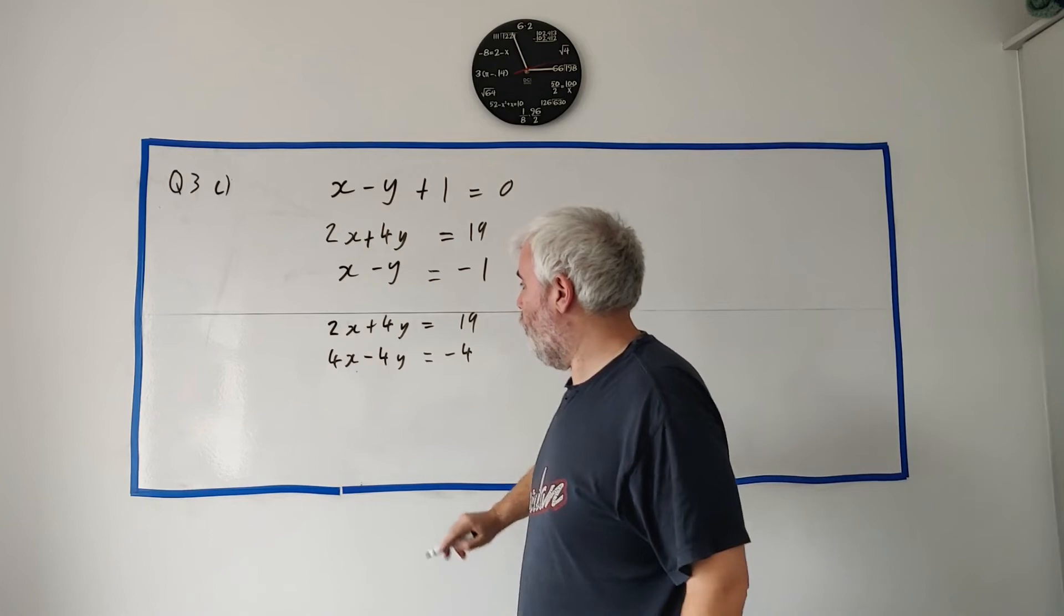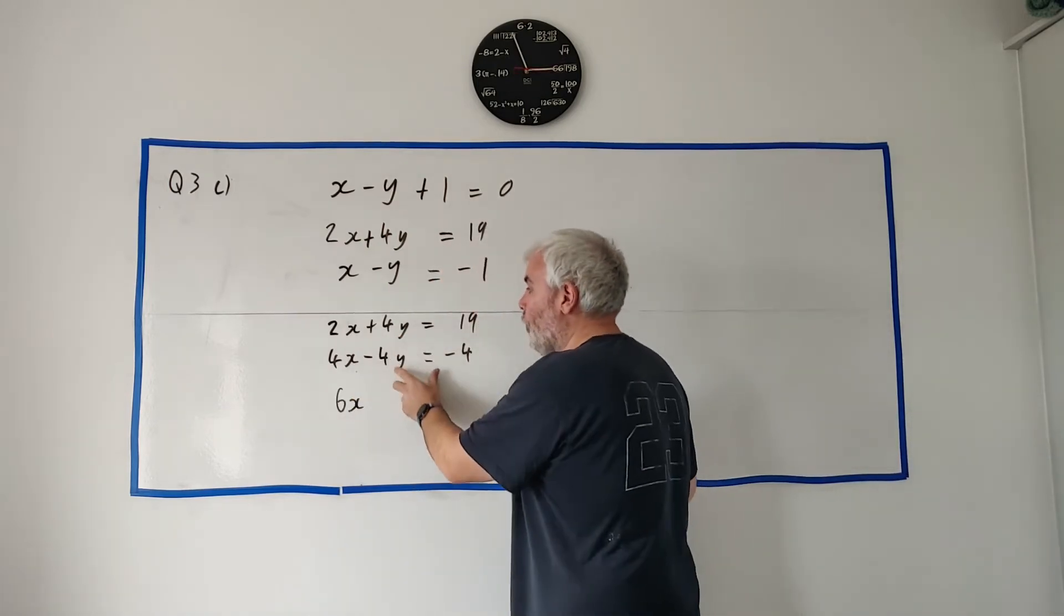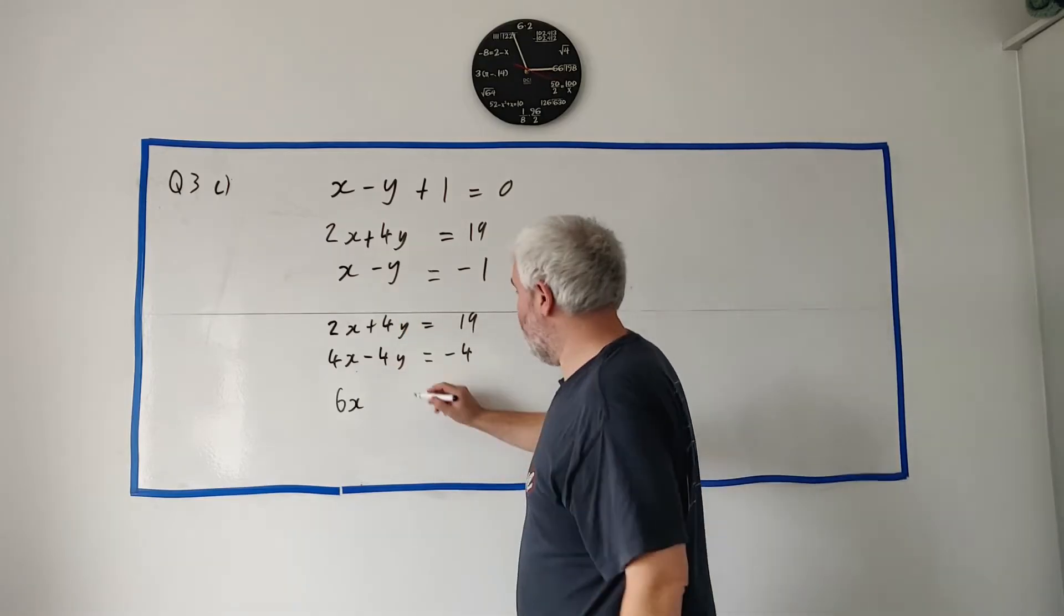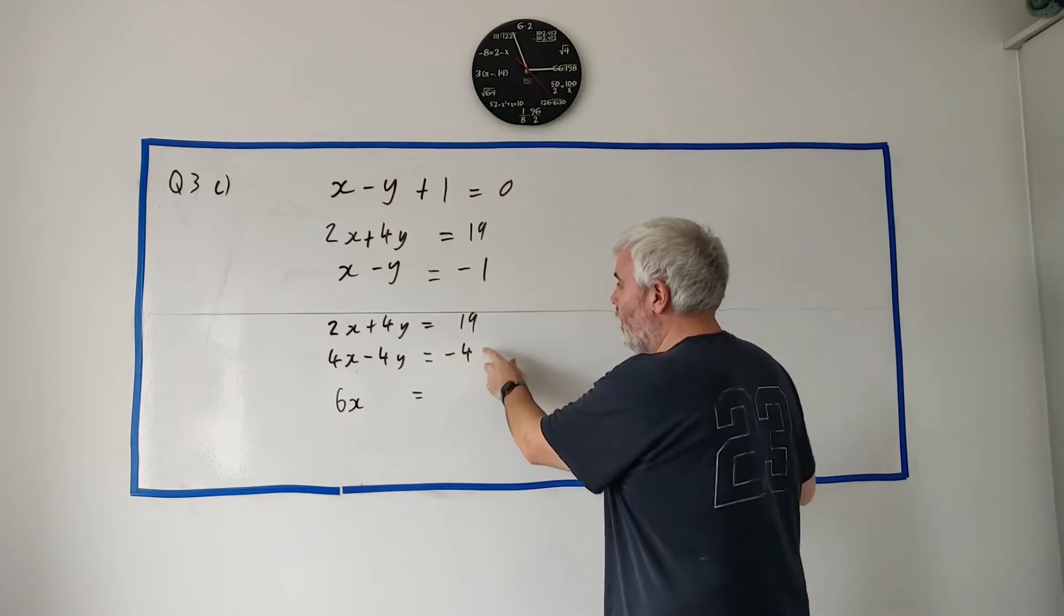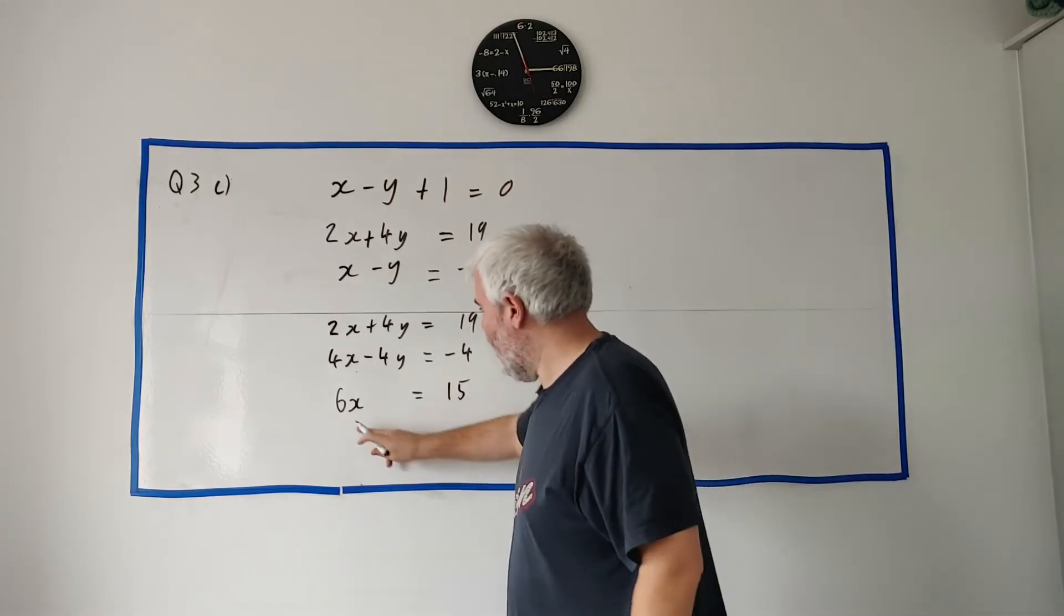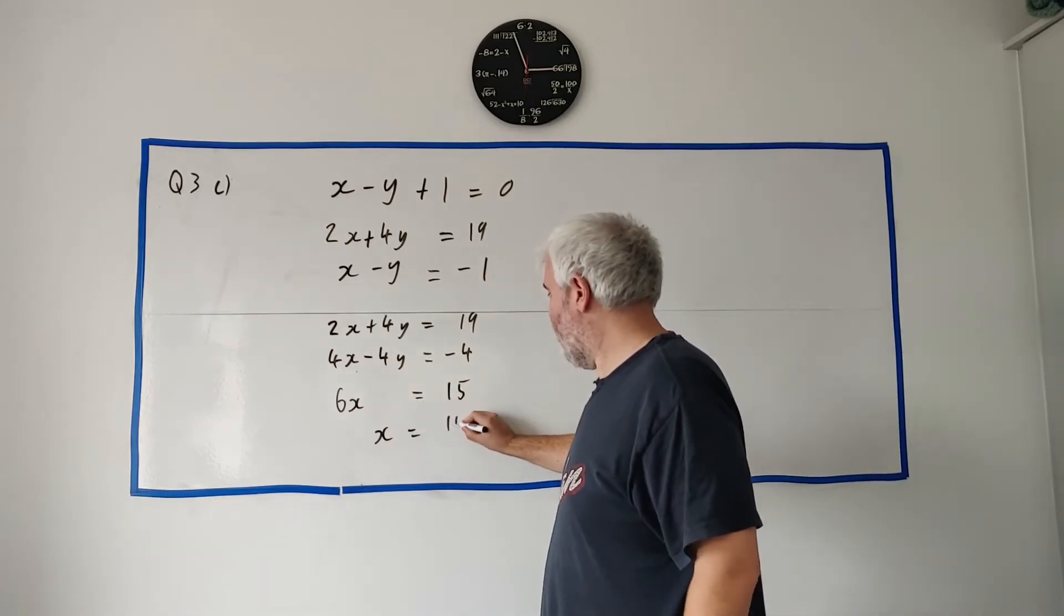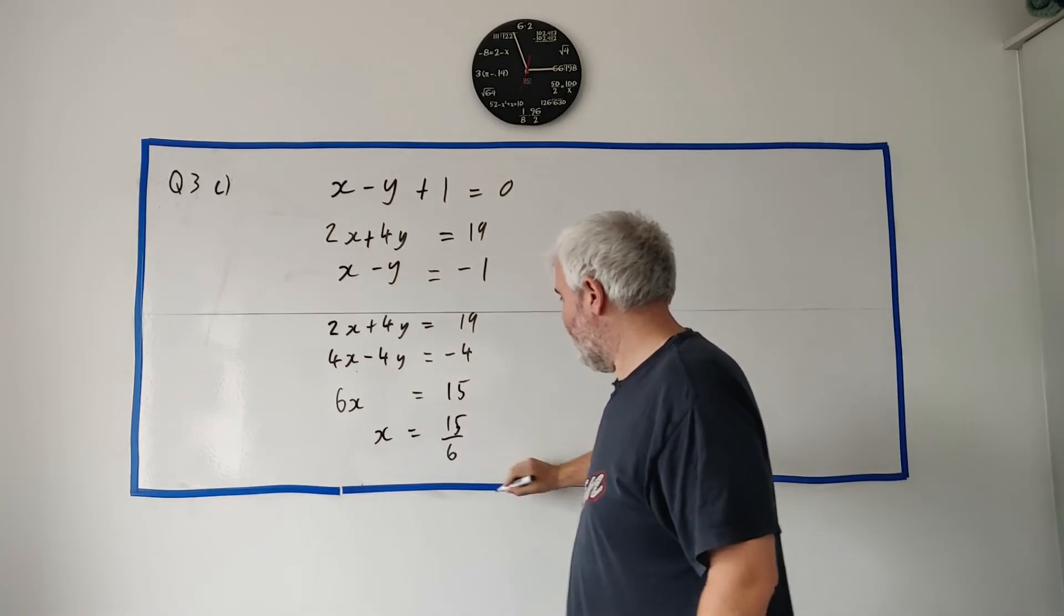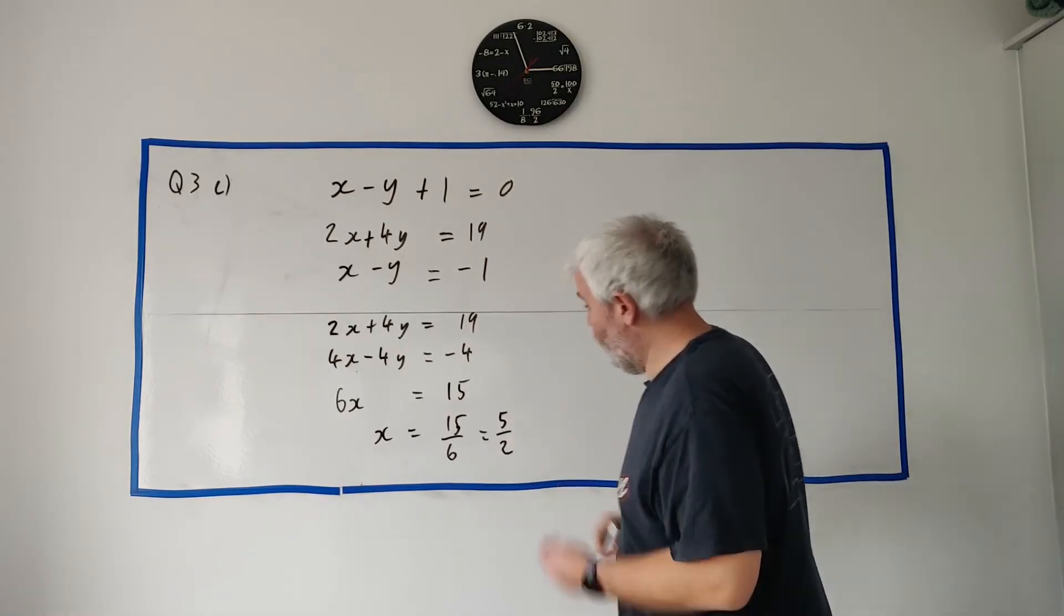If I add the two lefts together, I have to add the two rights together. So let's go ahead. 2x plus 4x is 6x. 4y plus minus 4y cancels. 19 plus minus 4 is 19 minus 4, which is 15. Now I have to get rid of the 6 here. x equals 15 divided by 6. Both of them divided by 3. So that's 5 over 2.